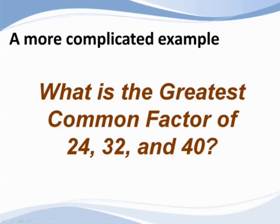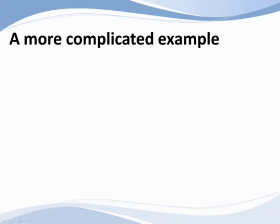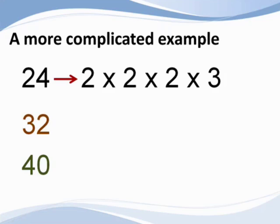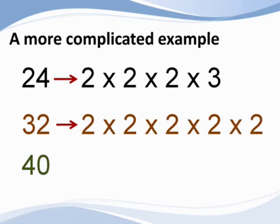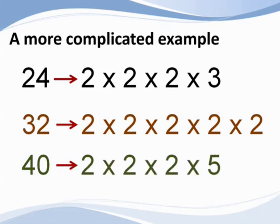Even if the problem becomes bigger, the process is the same. Suppose you are asked to find the greatest common factor between twenty-four, thirty-two, and forty. Take a few seconds to consider the factors of each number. So what do we have? Twenty-four is equal to two times two times two times three. Thirty-two is equal to two times two times two times two times two. Forty is equal to two times two times two times five.